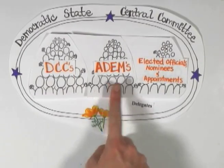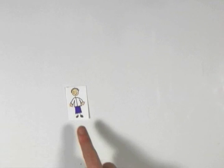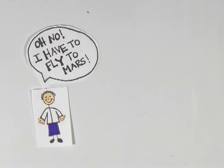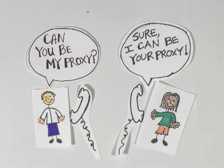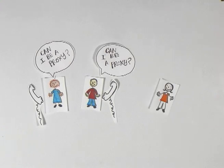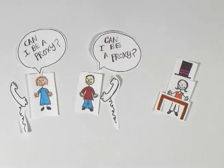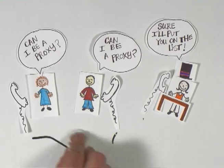Those are the three main ways to become a delegate. But here's a tip: if a delegate cannot attend a convention, they can appoint someone to be what's called their proxy, which allows that person to vote in the place of the delegate who can't attend. It's always a good idea to talk to your regional director or the chair of your county committee a couple months before the convention if you want to proxy, because there are often delegates looking for someone to proxy for them.